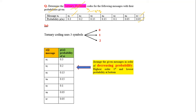In ternary coding, we use 3 symbols: 0, 1, and 2. In the case of binary coding, we used only 2 symbols: 0 and 1.